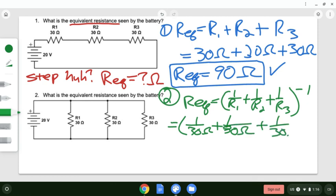If you put this in your calculator, what do you get? R_EQ ends up being 10 ohms.